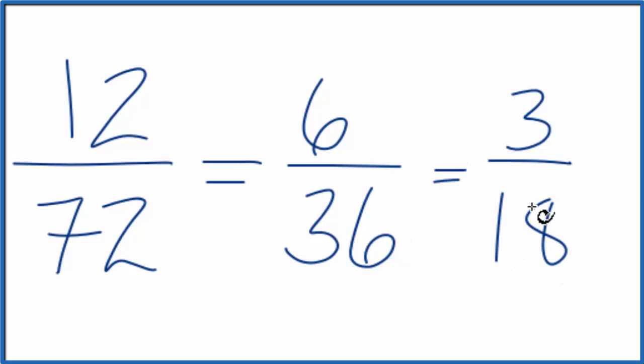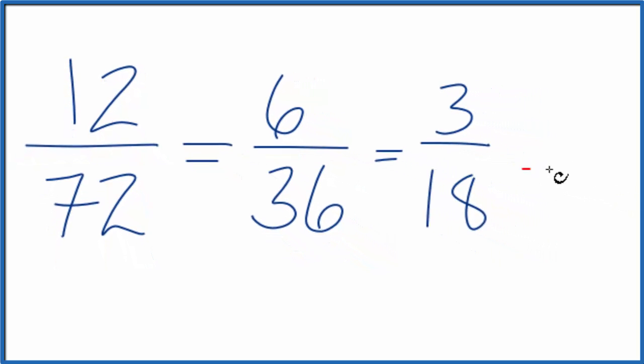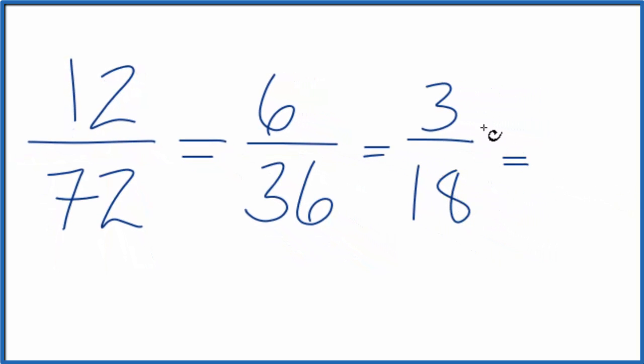And for either one of these, the factors are a little bit easier to figure out. 3 goes into 18 six times and into itself once. 3 divided by 3 is 1. 18 divided by 3 is 6. So we end up with 1/6 again.